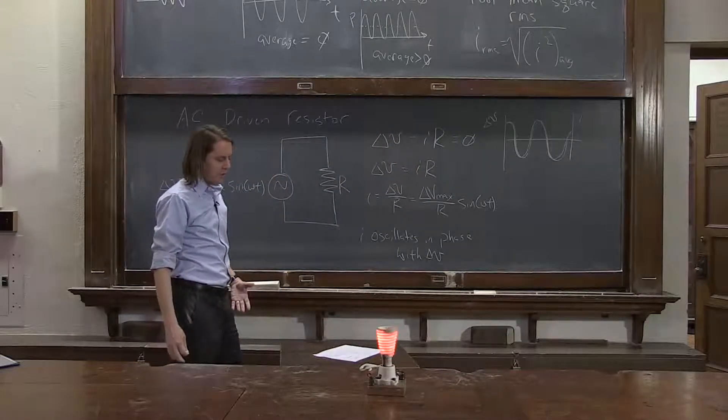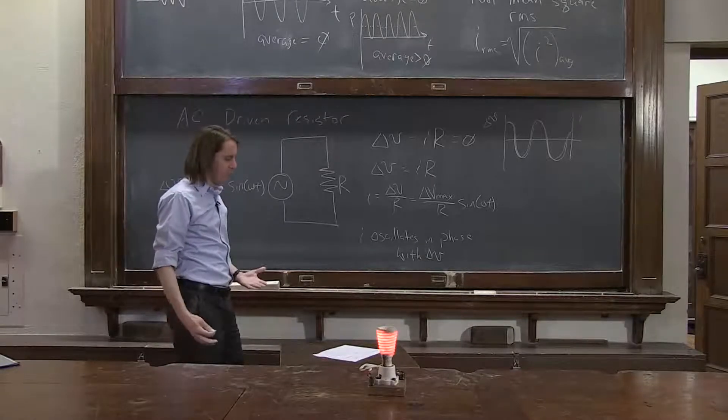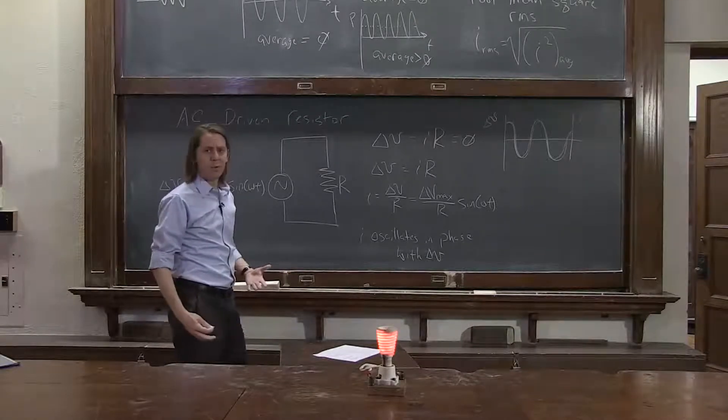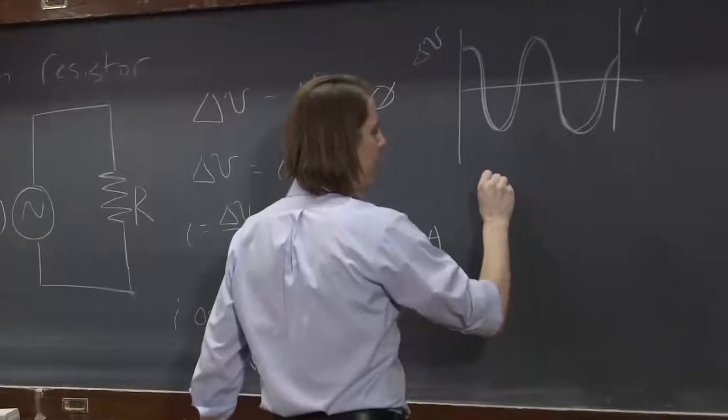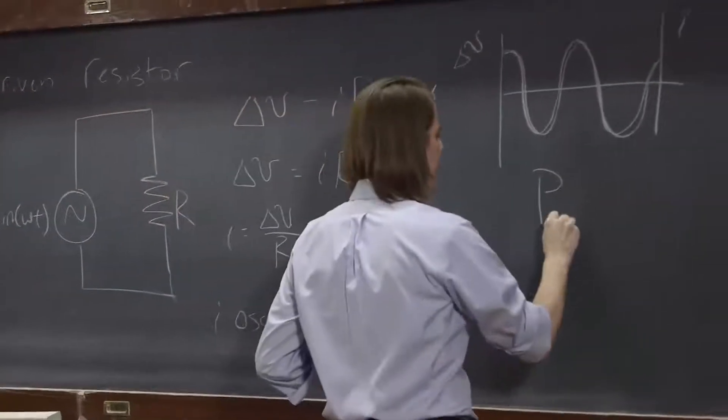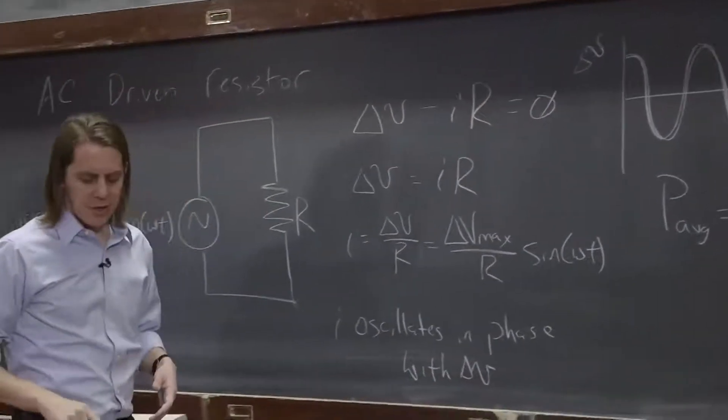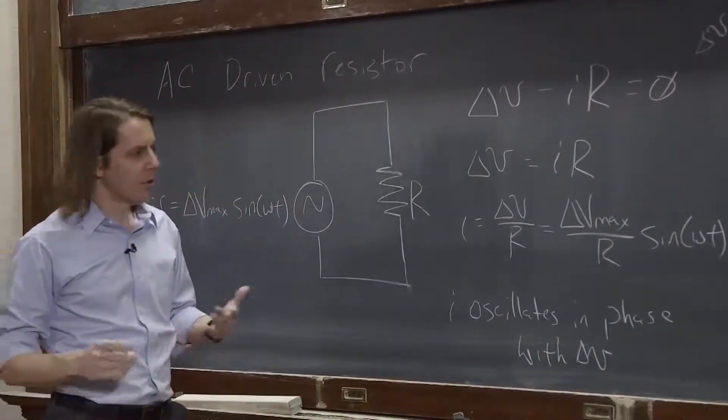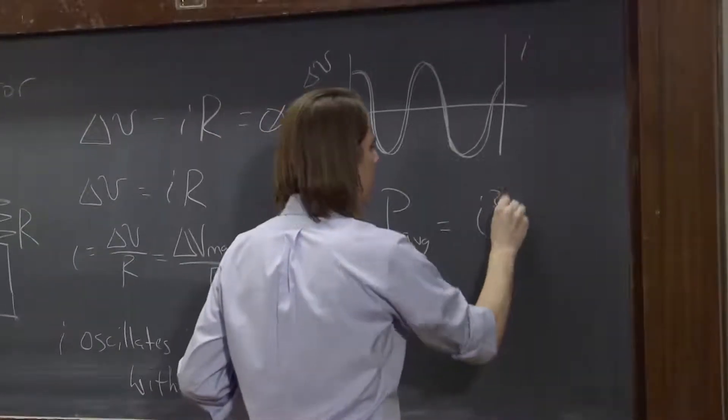Now, we could also think of this in terms of the RMS. So maybe thinking about the power is a good way to start. So we know that power, let's think about the average power. The real power being generated is fluctuating. Let's go straight ahead and think about the average power. But we know that power is I squared R.